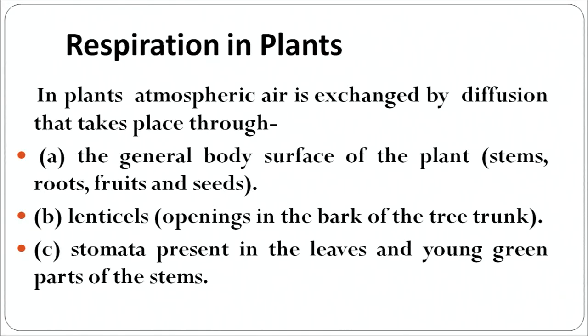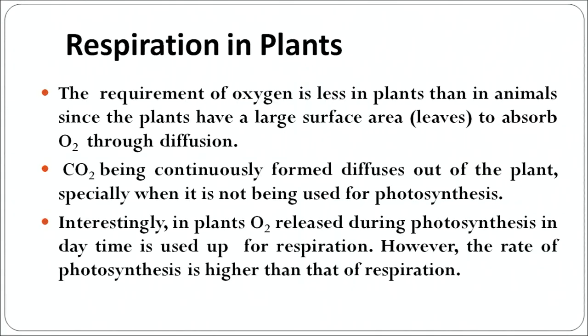In plants, atmospheric air is exchanged into the plant body by diffusion. This takes place either through the general surface of the plant — stems, roots, leaves, fruits, seeds — or through lenticels, which are openings on the bark of the tree, or through stomata on the green leaves or young parts of the plant. The requirement for oxygen is less in plants than in animals because plants have a large surface area to absorb oxygen through diffusion. Carbon dioxide, released as a byproduct, continuously diffuses out of the plant.